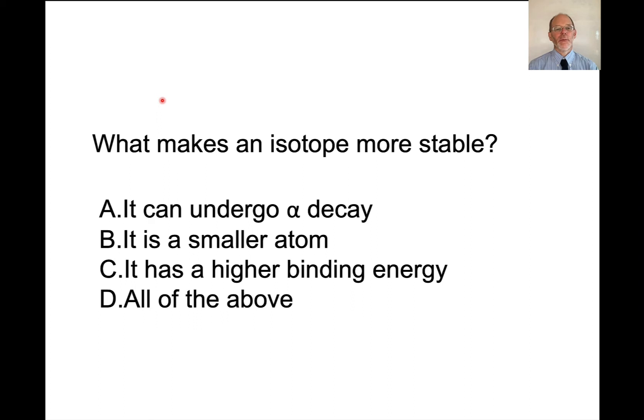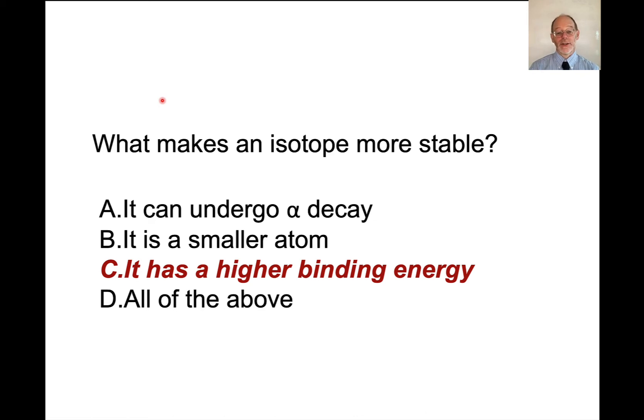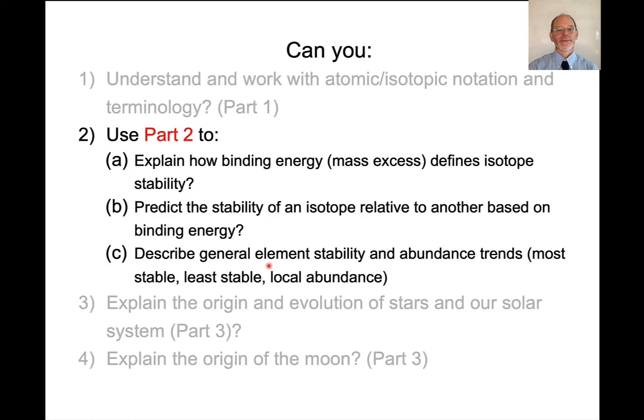So here's a question for you. What makes an isotope more stable? And the answer here is it has a higher binding energy. Whether it undergoes alpha decay or not doesn't really say a lot about stability. Well, if it undergoes alpha decay, it's usually less stable than some other decay product. The size of the atom really makes no difference. It's all about binding energy.